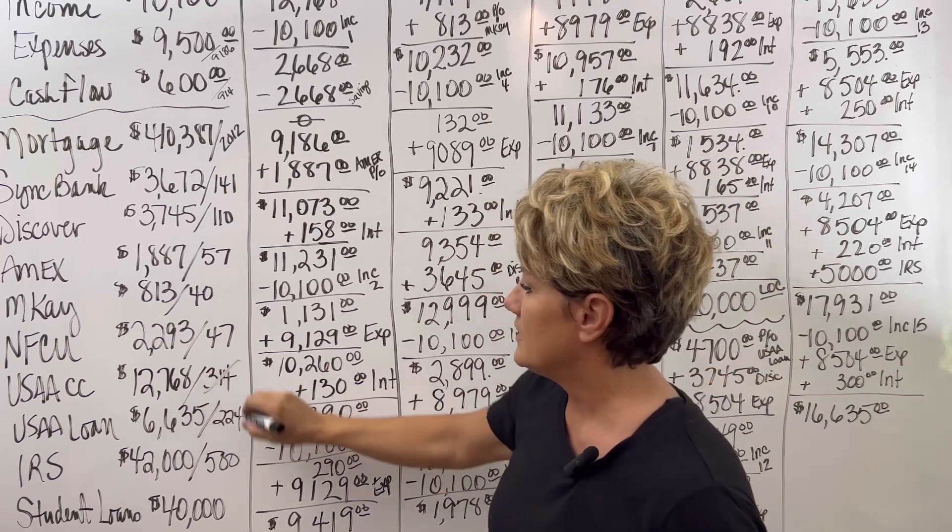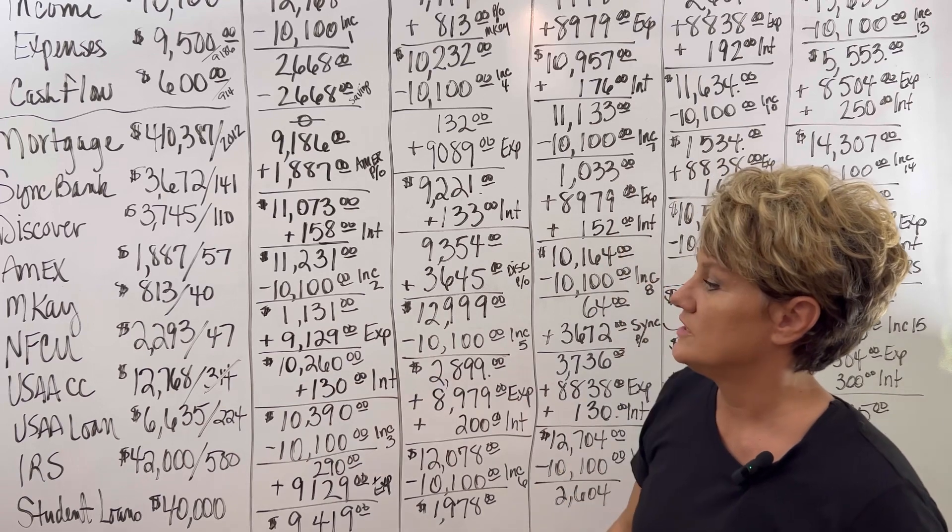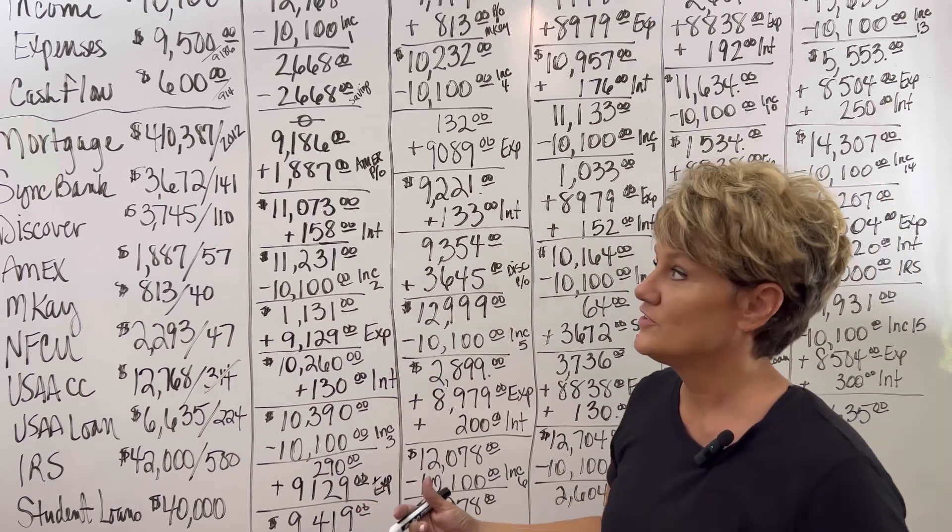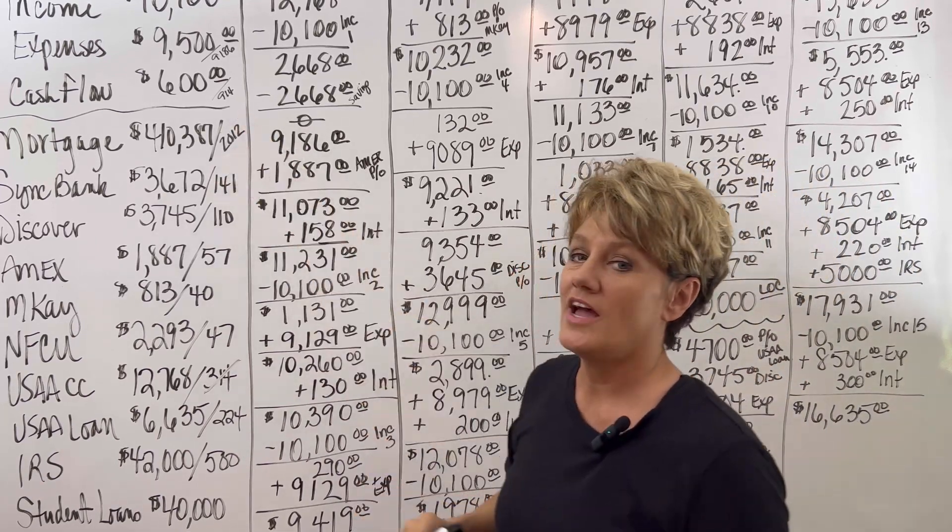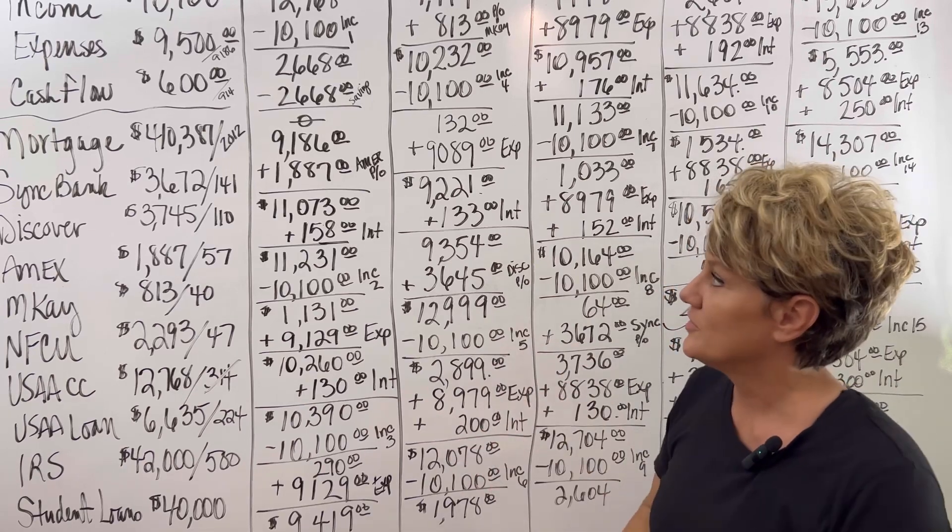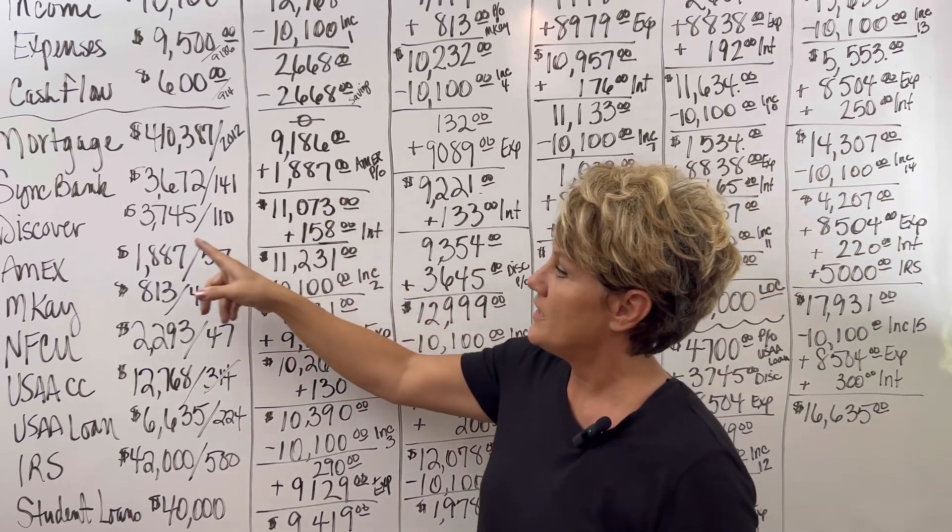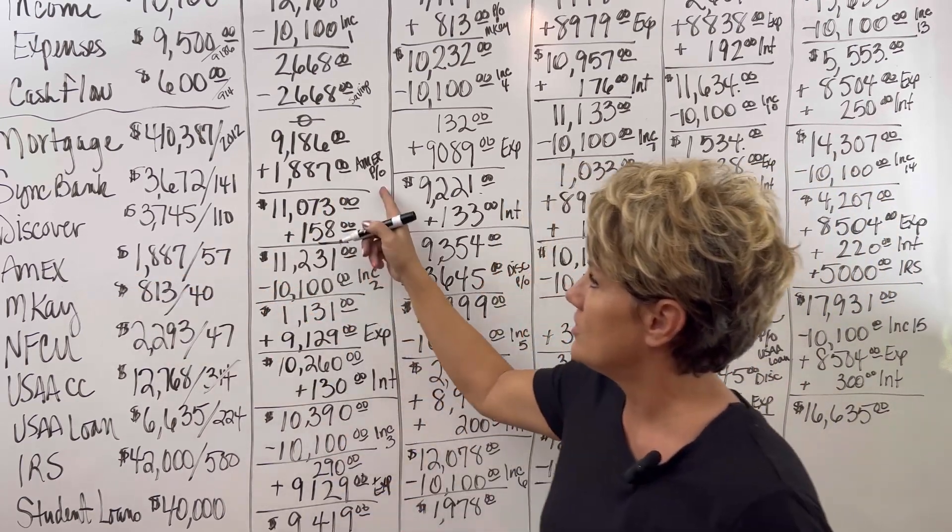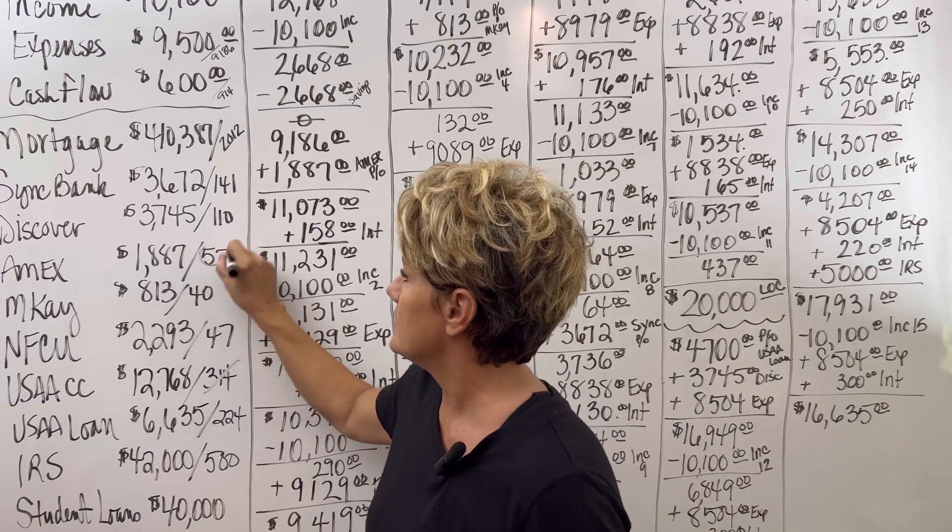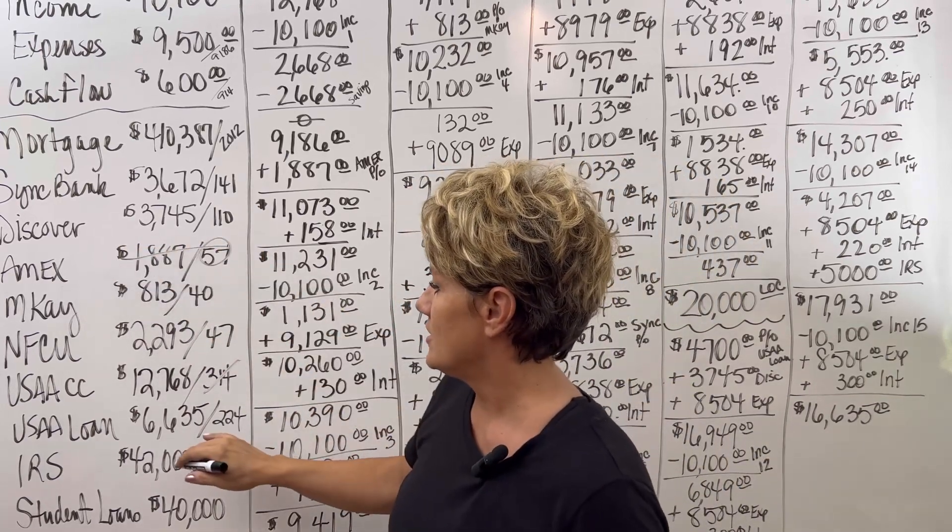When we did the income transfer, it knocked out this payment of $314, which now becomes cash flow. So their cash flow moved up to $914 just in the first month. Also in the first month, we're going to come in and pay off the American Express card. That will also make this $57 cash flow. So there's that debt gone as well.